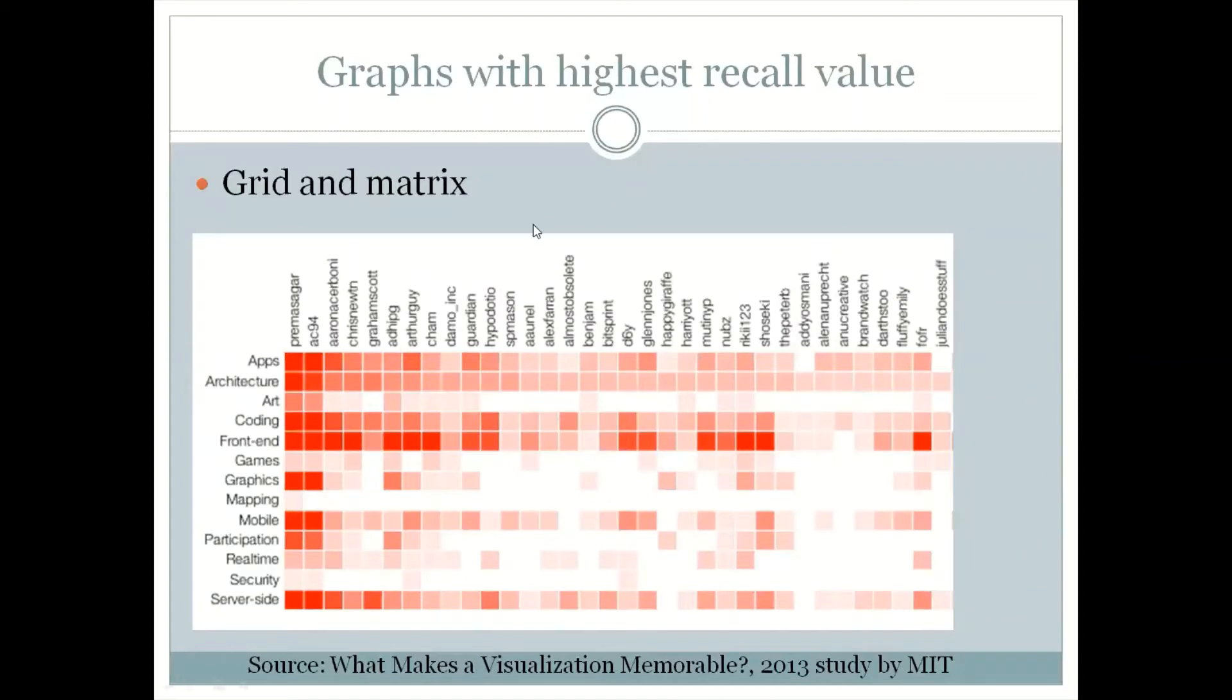In that study, grid and matrix basically had the maximum recall value. If you have a dataset which can fit in this, one classic example of this makes sense. The first time I had read this, it made a lot of sense when looking at the railways timetable in India—this is the pattern it uses. If your content can be plotted in this manner, it might not be a bad idea to do it.